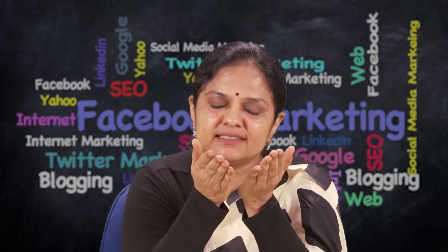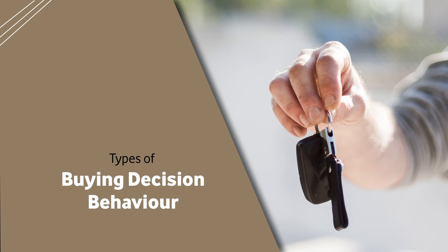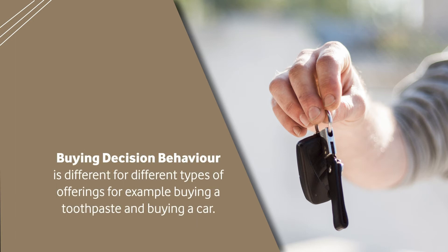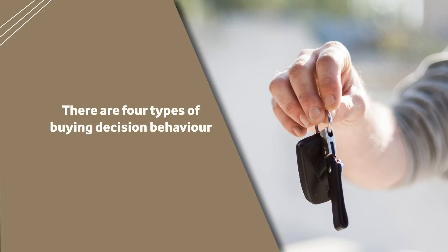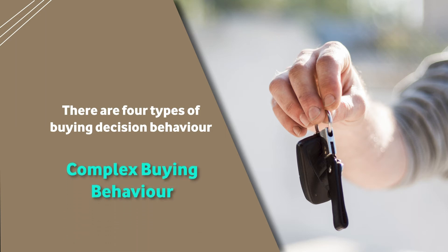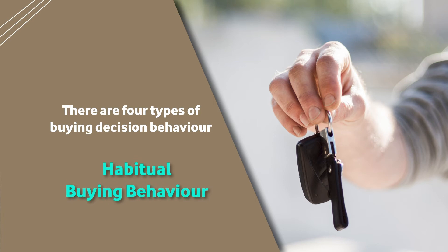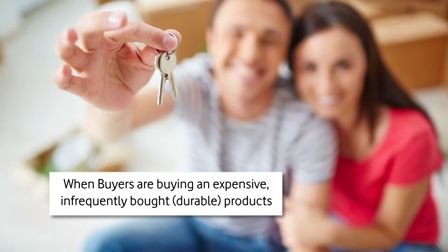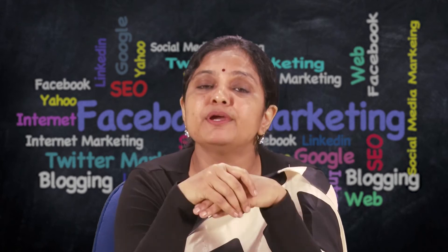We have seen the stages followed when a customer makes a purchase decision. Now we will see the various types of buying decision behavior that customers show. Buying decision behavior is different for different types of offerings — for example, buying a toothpaste is very different from buying a car. Considering all these factors, we can classify buying decision behavior into four categories: complex buying behavior, dissonance reducing buying behavior, variety seeking buying behavior and habitual buying behavior. Complex buying behavior is when buyers are purchasing expensive or infrequently bought products; the behavior they show is called complex buying behavior.